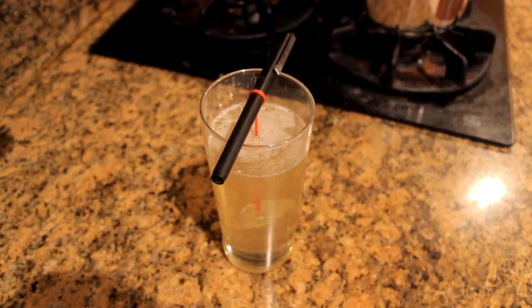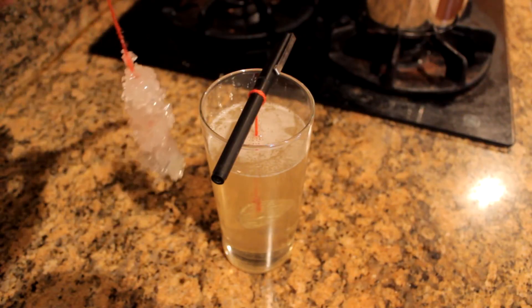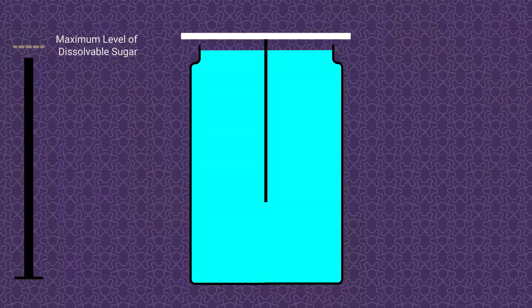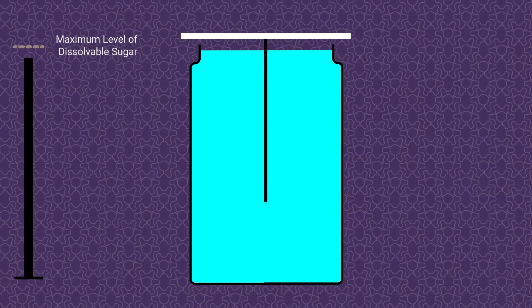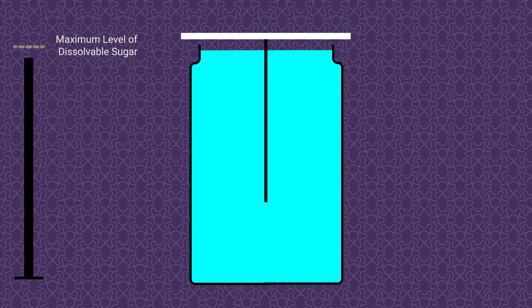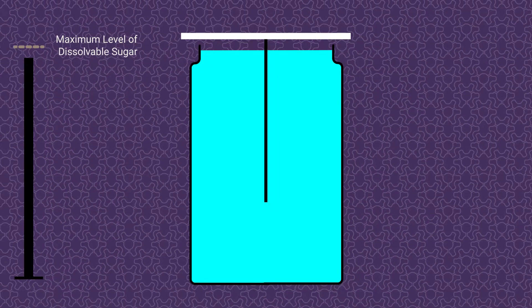Now if we wait 3 to 4 days and allow for it to crystallize, we're going to get something like this. Now let's understand why this happened by looking at a 2D version of a crystal growing. Why do crystals grow?